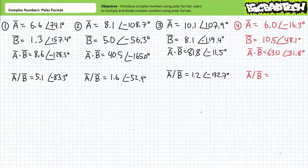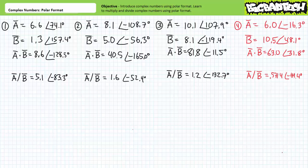For the fourth example problem, A times B results in 63 at an angle of 31.8 degrees, and A divided by B results in 0.5714 at an angle of negative 64.4 degrees. Hopefully you did well on that set.